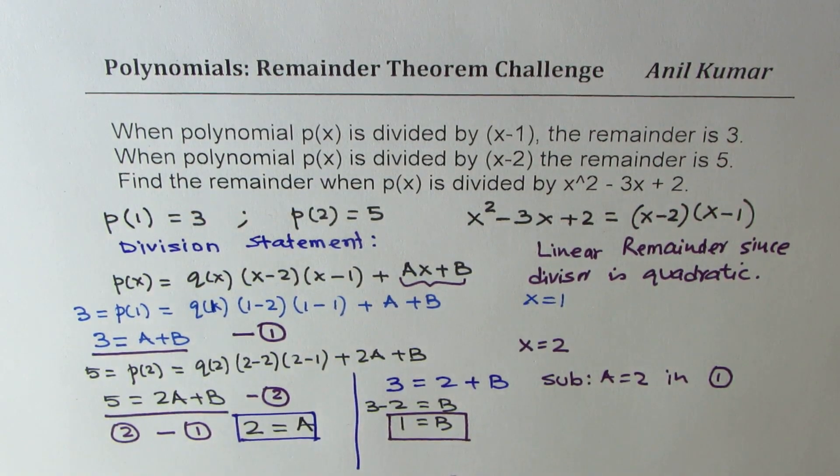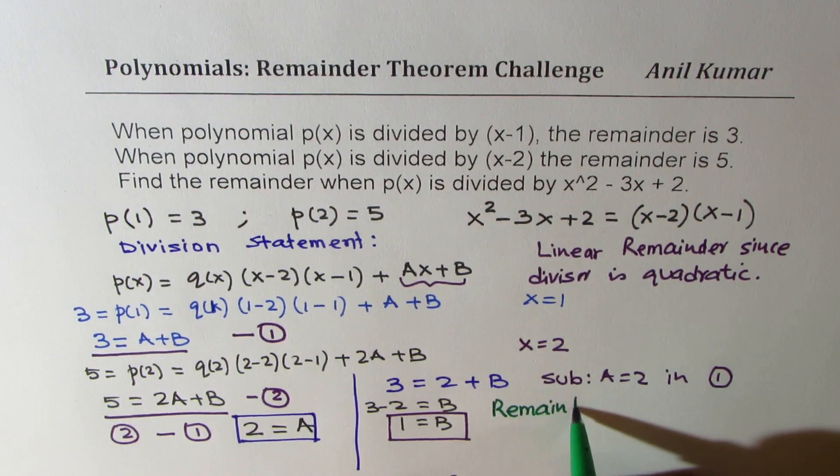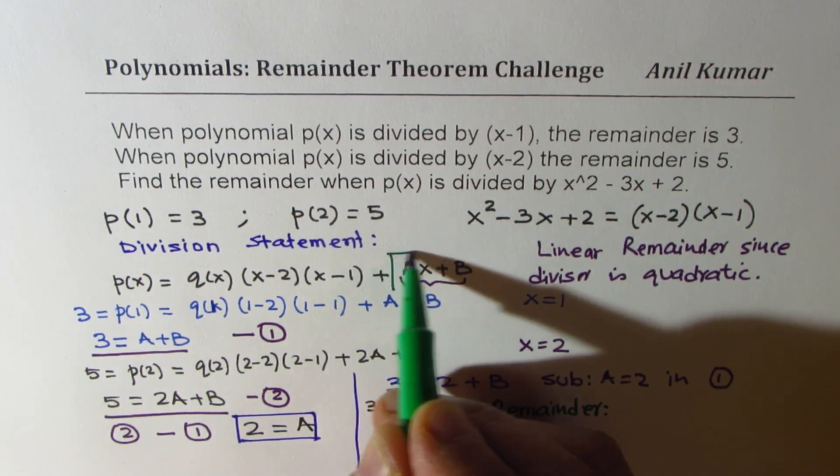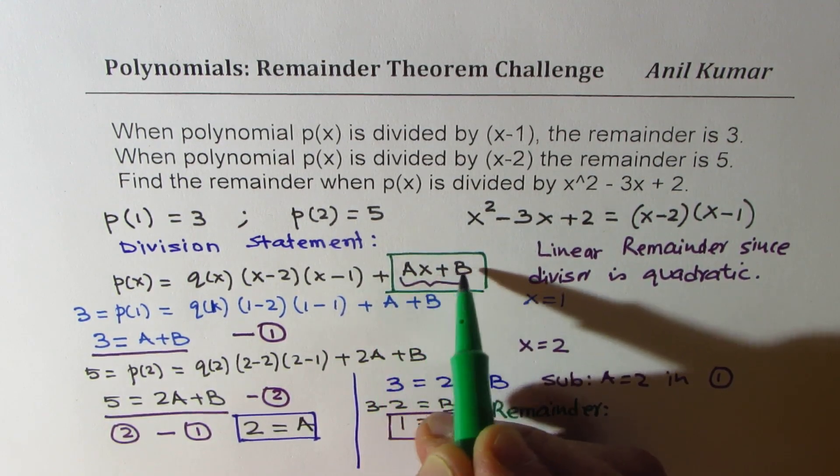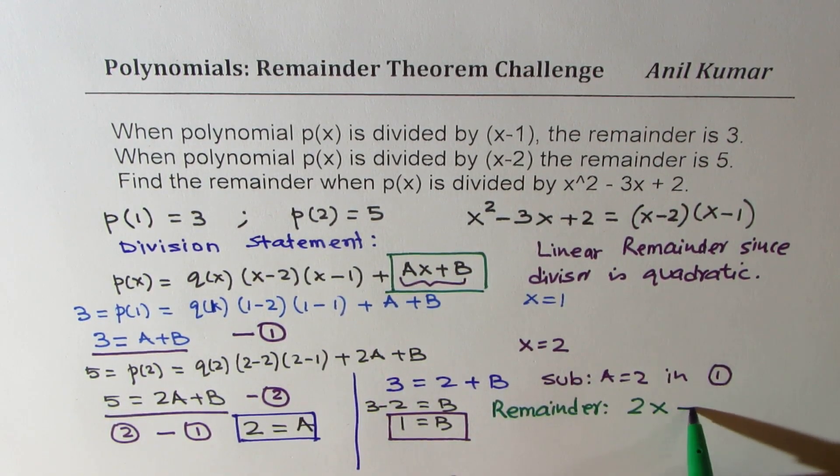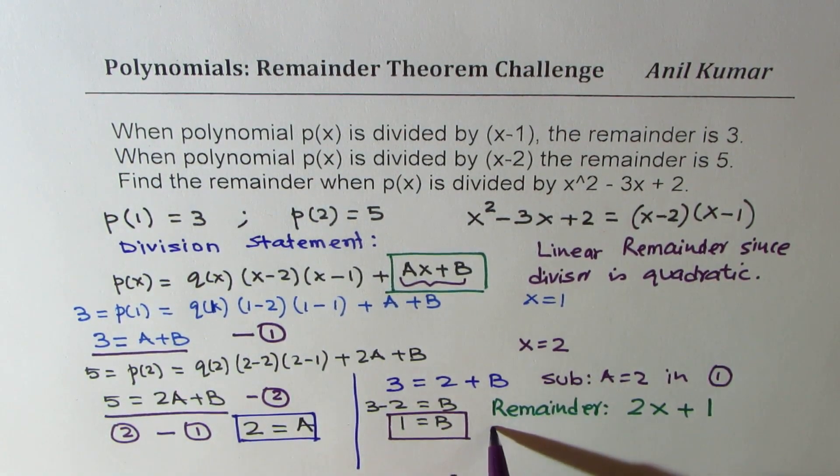That gives us the remainder. Perfect. So therefore, the remainder is what? Ax + B was our remainder. We have found the value of both A and B is 2, so we get 2x and B is 1, plus 1. So that becomes the remainder 2x + 1 in the given scenario.